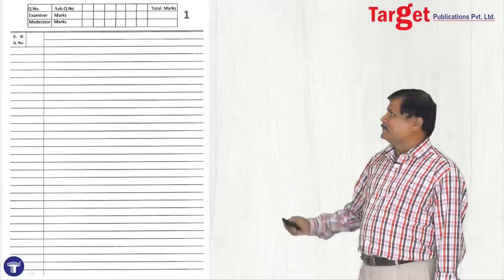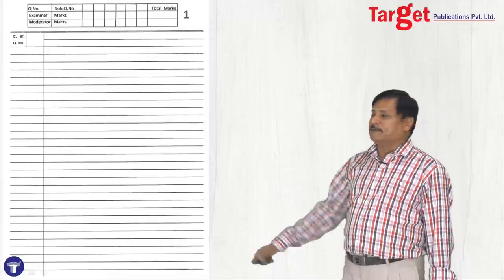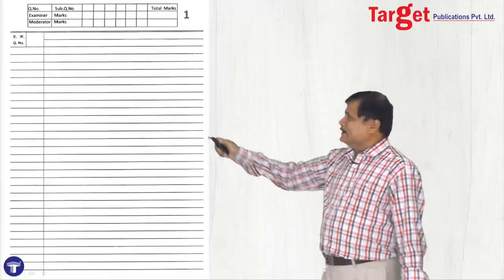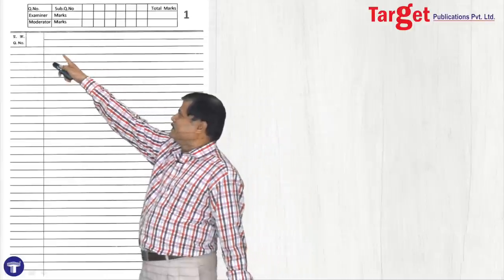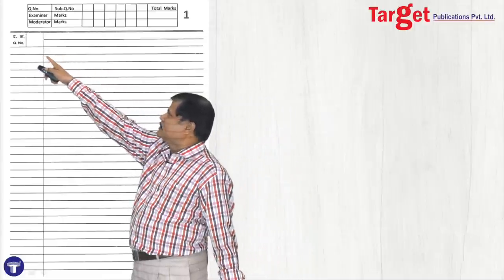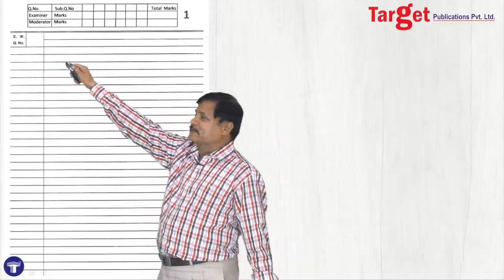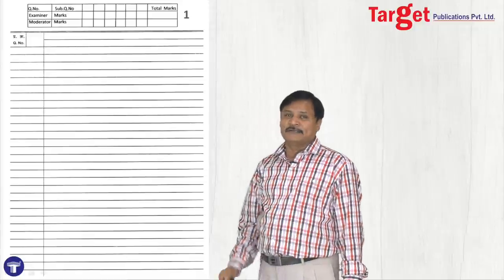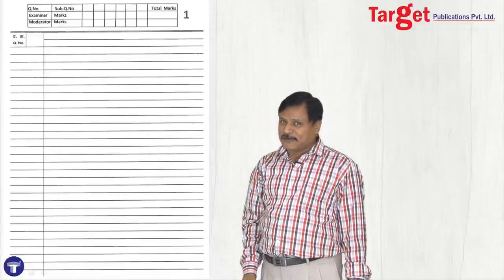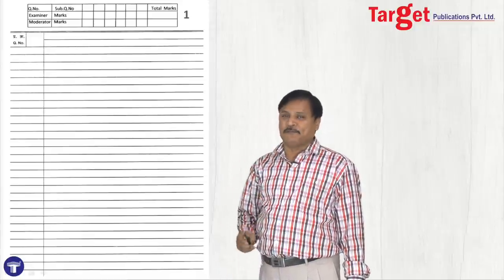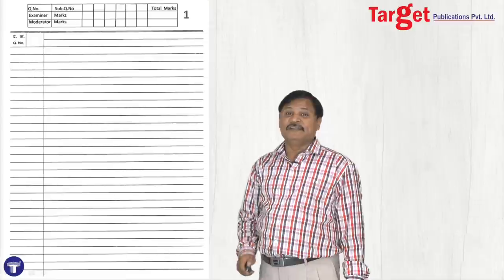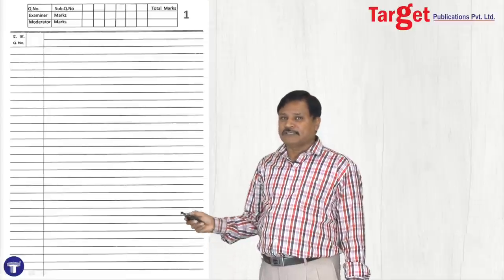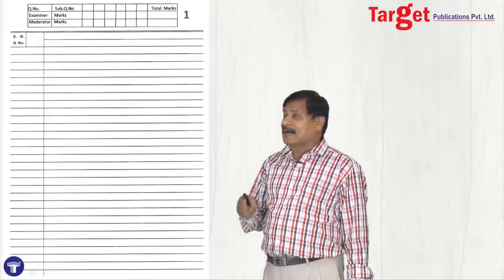You are on the first page, page number one. There is a box given here — it says 'question number' and in Marathi also 'question number'. This box must be filled by the student on every page with the main question number. Don't write the sub-question numbers there, but the main question number.